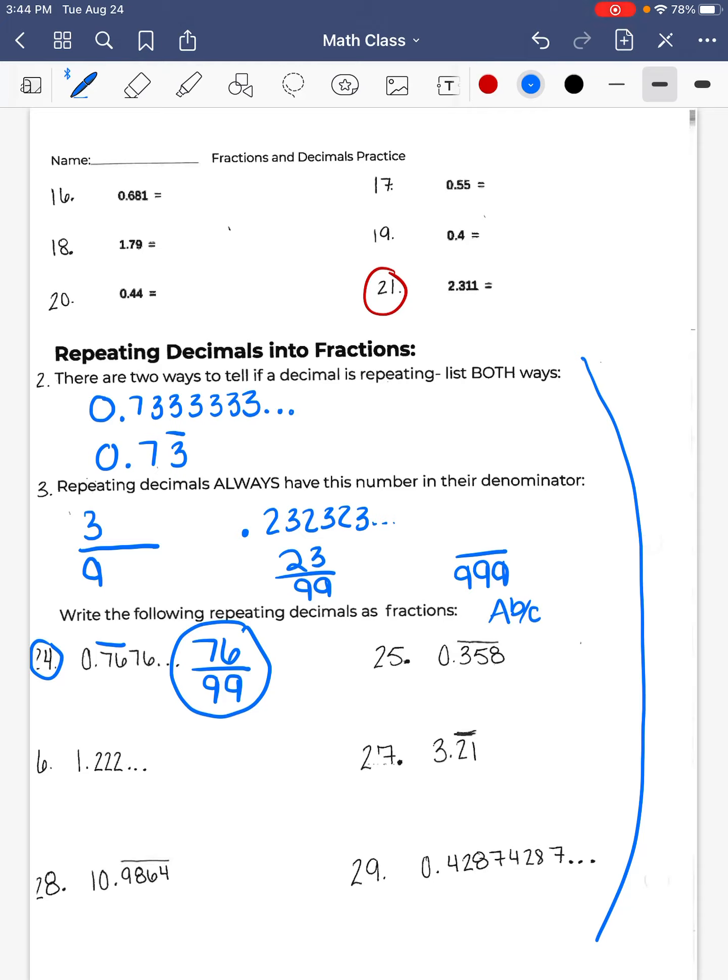So as you see number 25, there's a bar over three numbers, so 3, 5, and 8. Those are all repeating. So that means we're going to have 358 over 39, since three numbers are repeating, 999. Now, same thing. You're going to want to go into your calculator and do 358, ABC, 999. Hit enter. Since it came out as the same answer over again in your calculator, it is fully reduced.